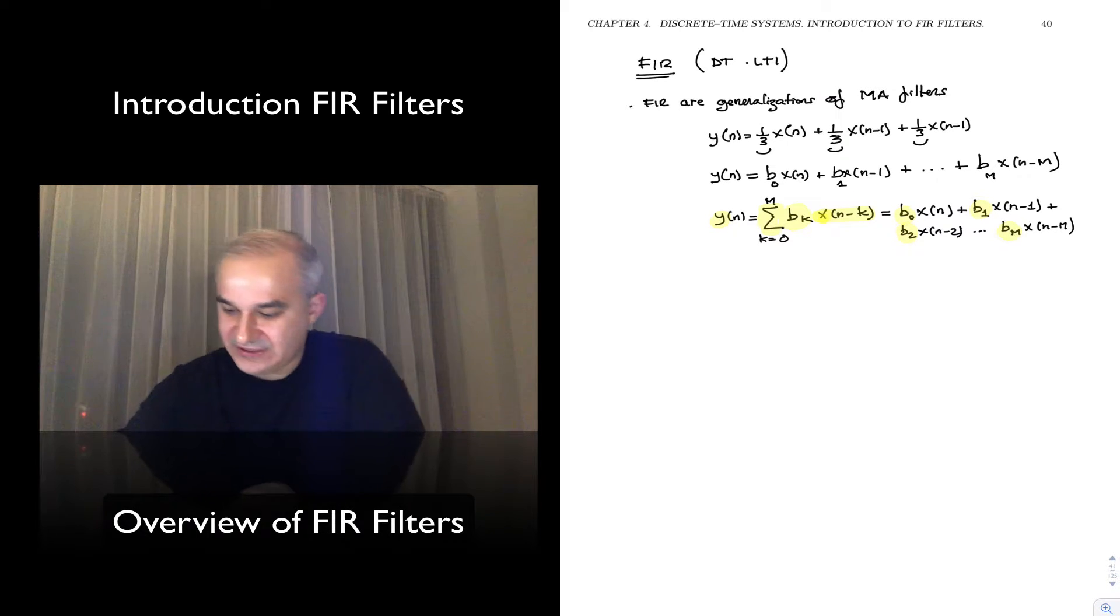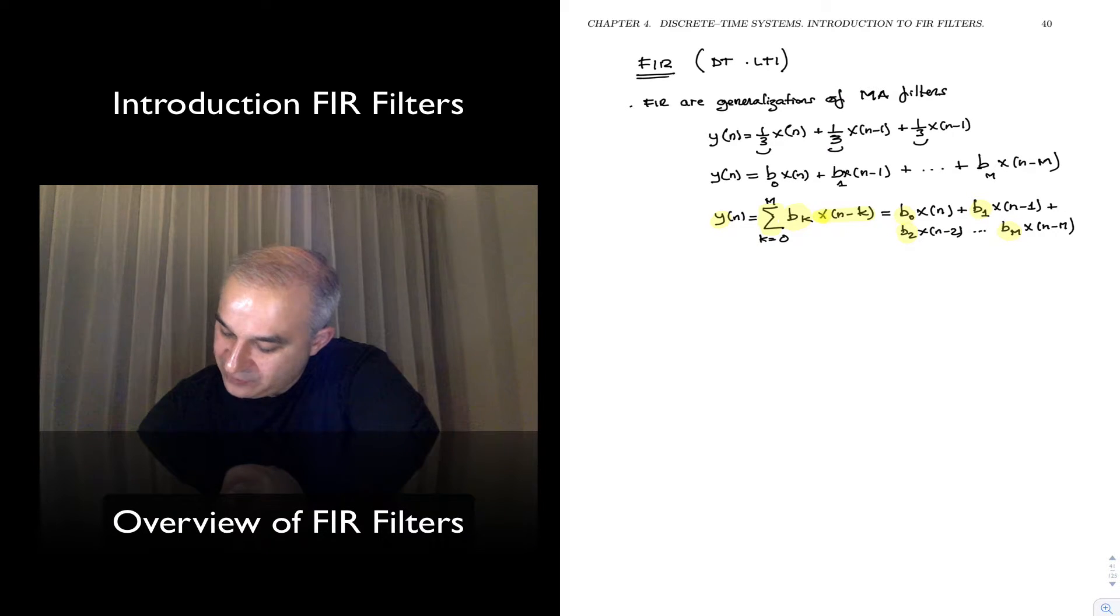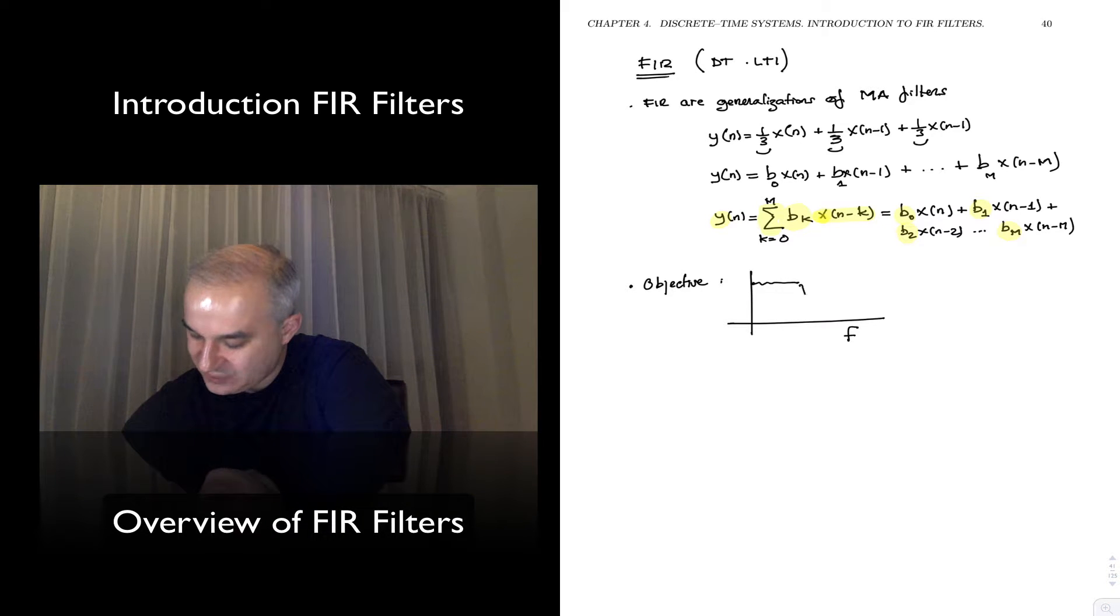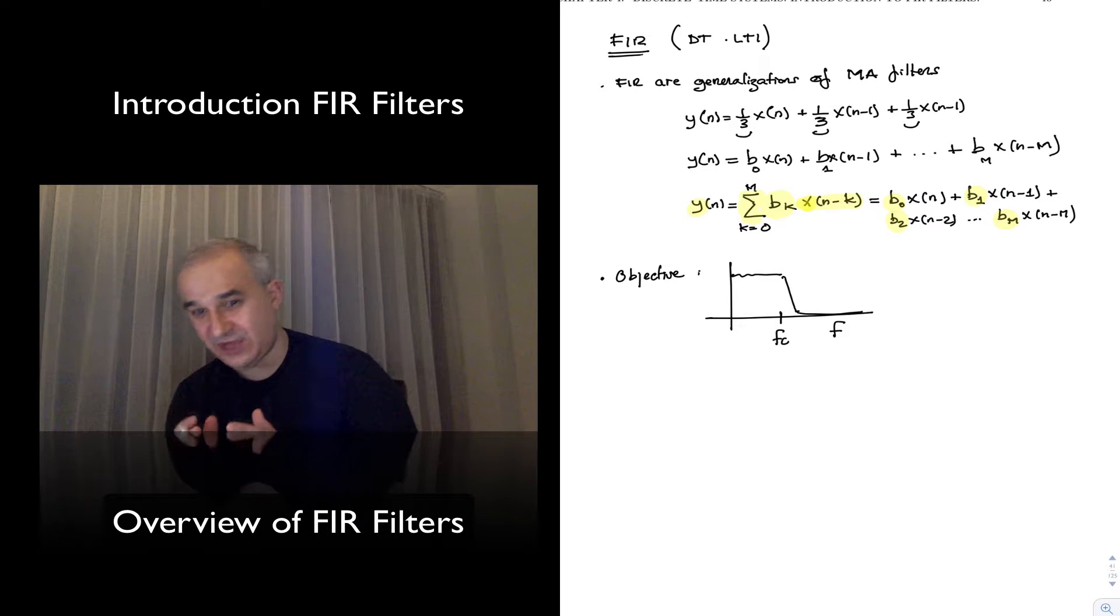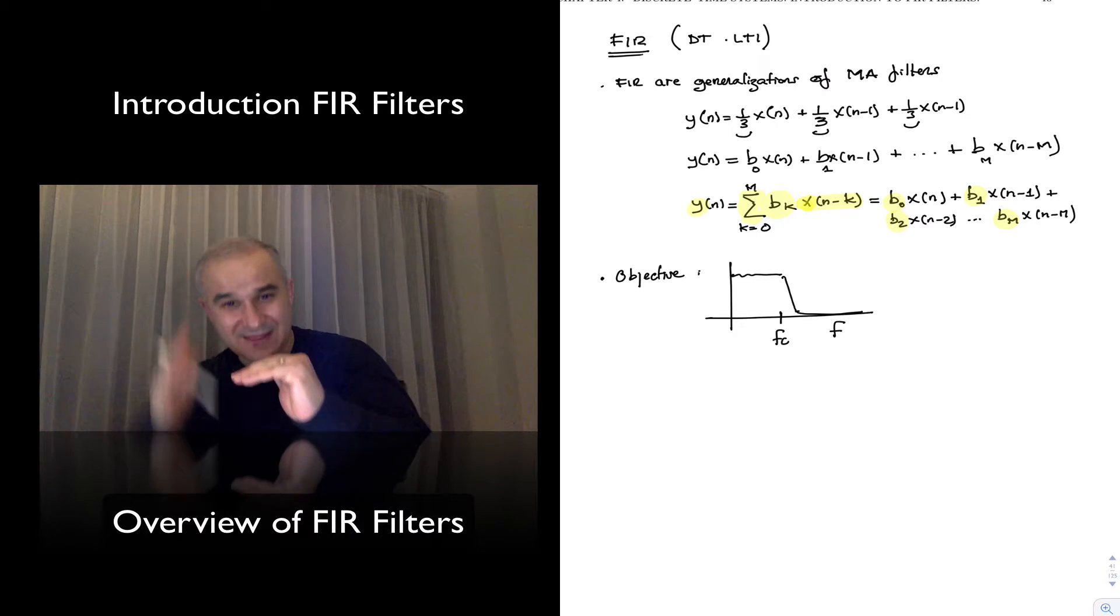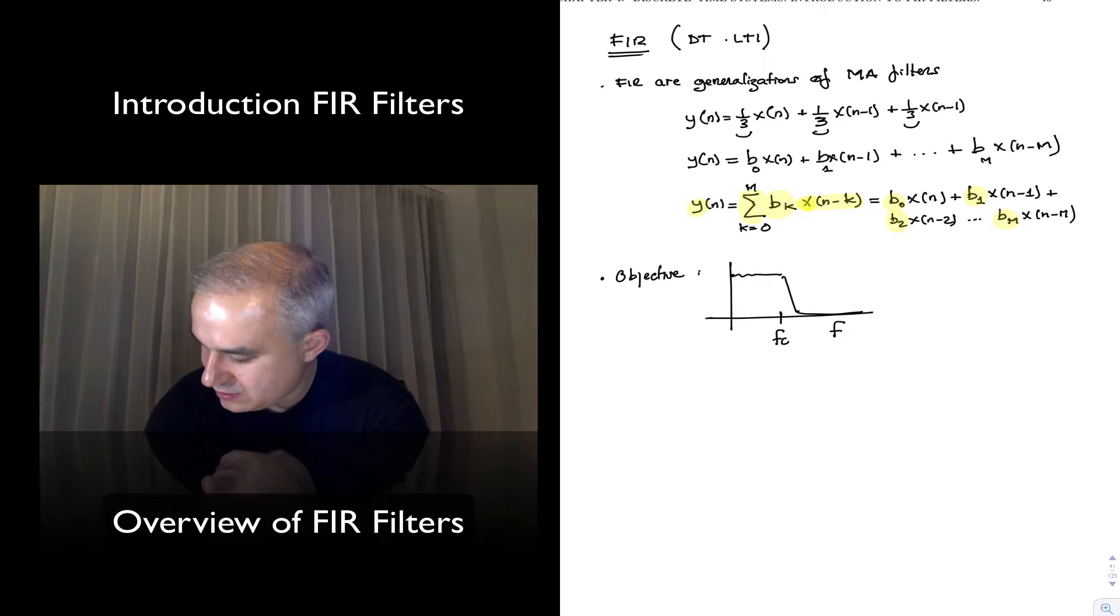The objective of filter design is going to be giving a frequency response, so objective of filter design is giving a desired frequency response. So this is frequency, and you say, okay, I want that in my pass band there is very little ripple, that it attenuates really fast here, the transition band, that attenuates more than whatever many dBs, that my cutoff frequency is whatever we design.